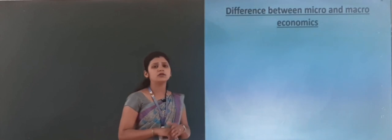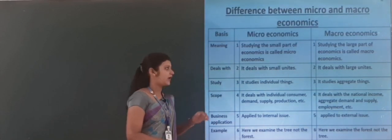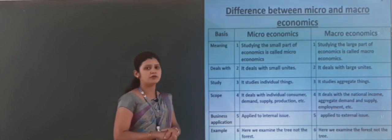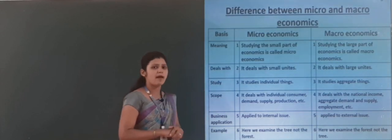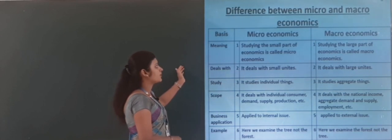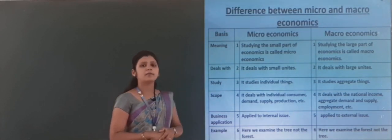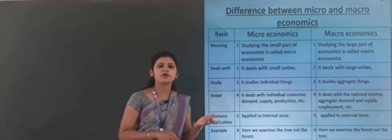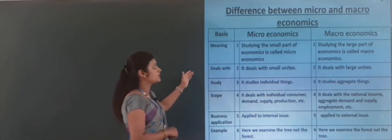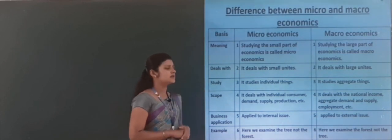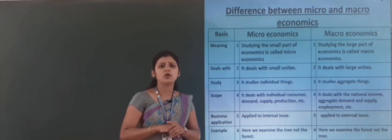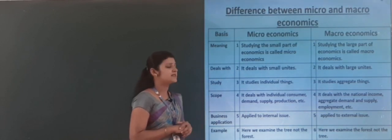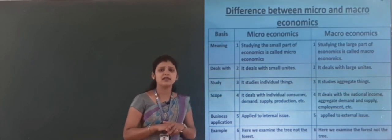Now let's see some important differences between micro and macroeconomics, which are very important for your examinations. This table shows the difference between microeconomics and macroeconomics. Studying the small part of economics is called microeconomics, and studying the large part of economics is called macroeconomics. Microeconomics deals with small units, while macroeconomics deals with large units.